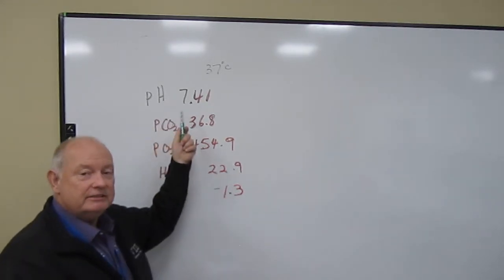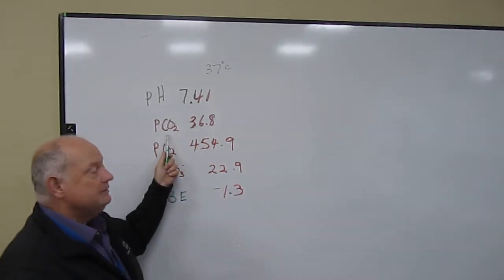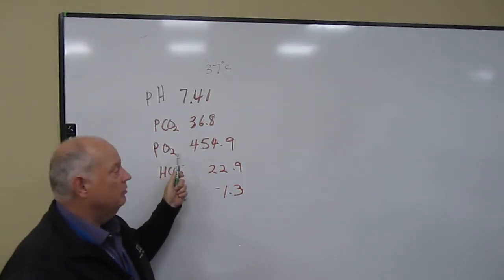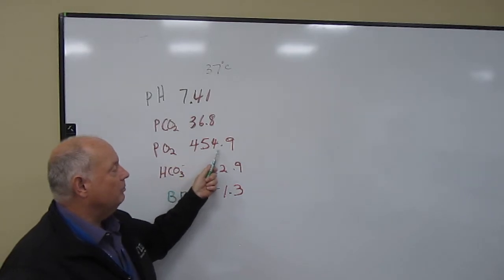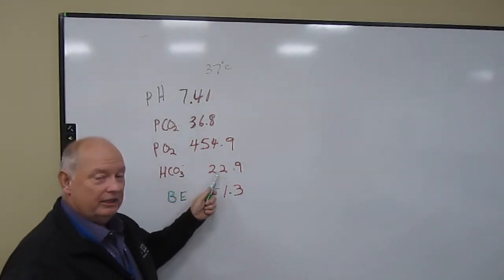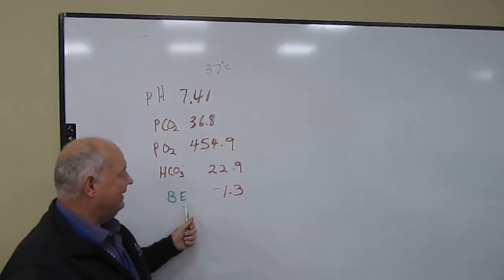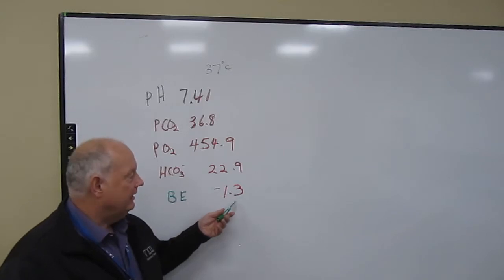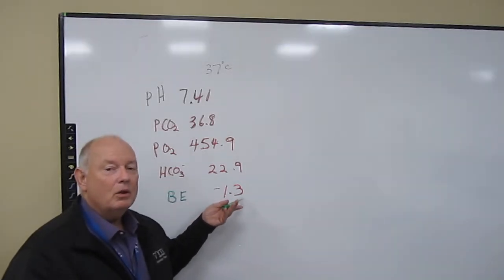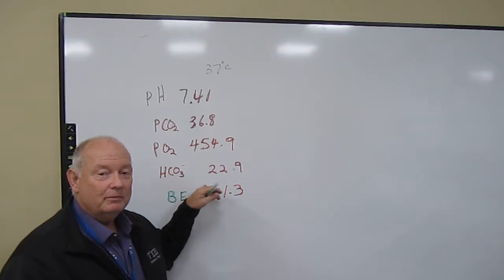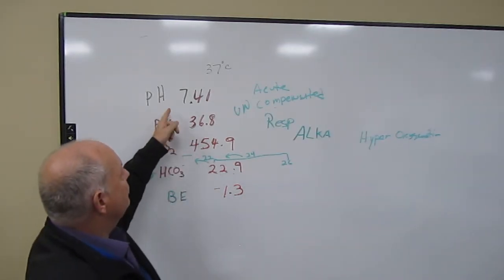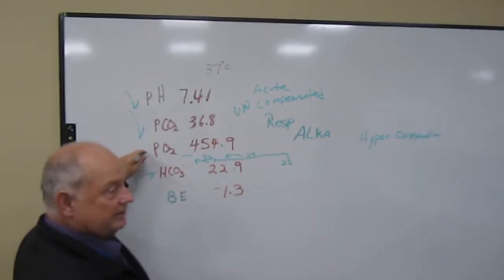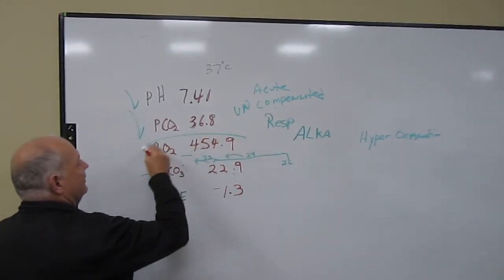Here we have a pH 7.41, CO2 36.8, PO2 454.9, bicarb 22.9, and a base excess minus 1.3. The base excess is essentially how low he has gone down from normal for most bicarb. Now are these out of the normal range? No, this is in normal range. This is in normal range. This is really high. We'll put a circle around that.